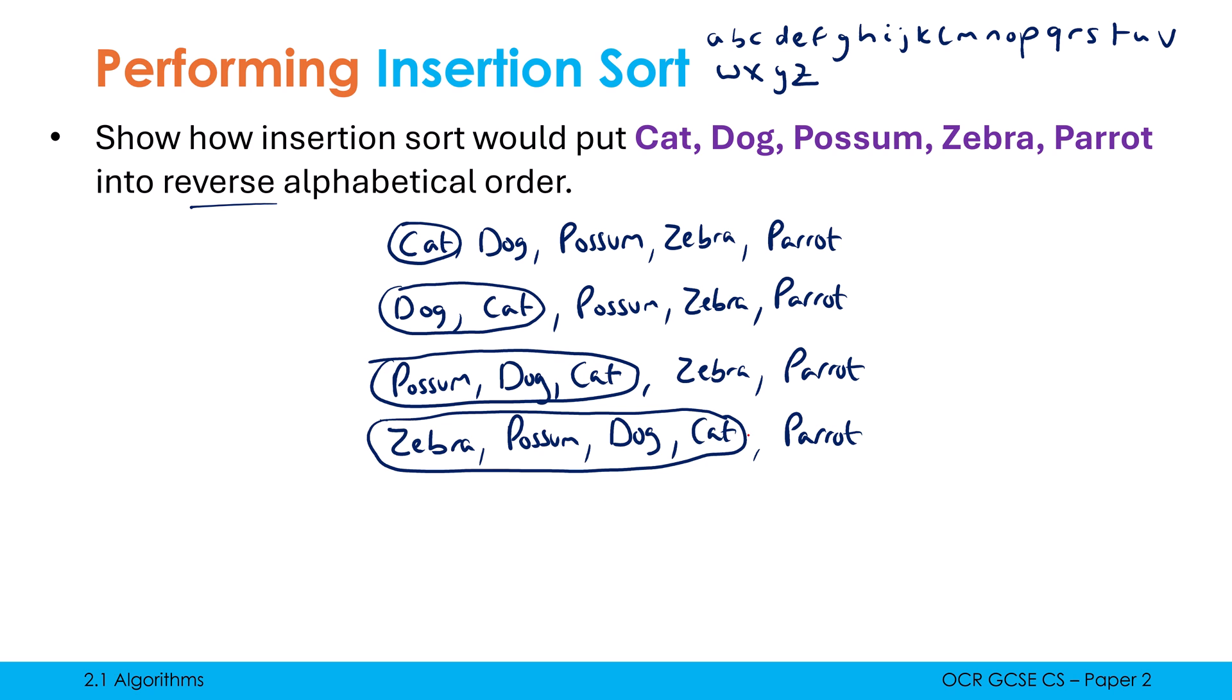And parrot makes it marginally more interesting because I've got two P's at the start. So I don't look at the first letter anymore. I look at the second letter because this parrot is going to go either left or right of possum. A is at the start of the alphabet, obviously. So therefore parrot goes before O. So really it becomes between possum and dog because remember I'm doing it in reverse alphabetical order here. And that is my answer for this alphabetical example.